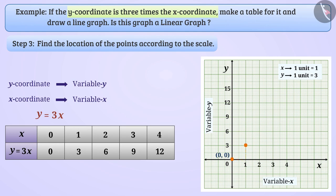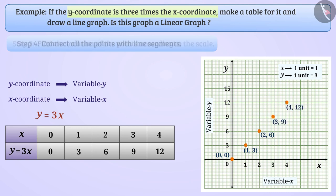Similarly, we will move 2 units to the right from the x-axis and 2 units upward, placing a point at coordinates (2, 6). After this, we will also mark the coordinates (3, 9) and (4, 12).